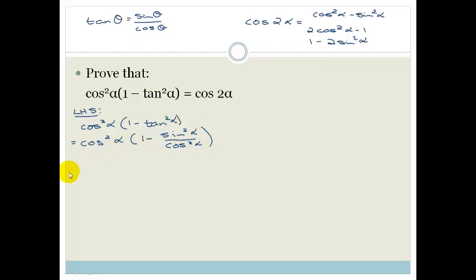So now let's multiply this out. So cos squared alpha times by 1 is cos squared alpha minus, if we multiply this out, becomes cos squared alpha times by sin squared alpha all over cos squared alpha, and oh look we can cancel.